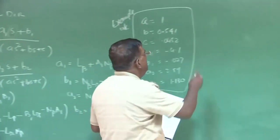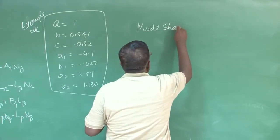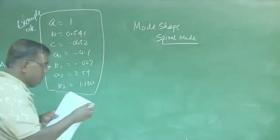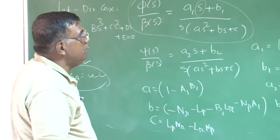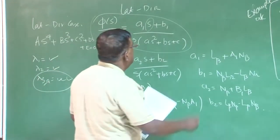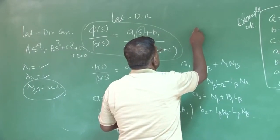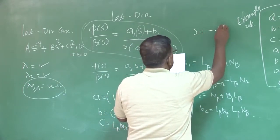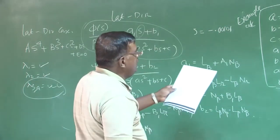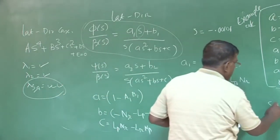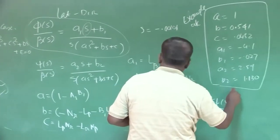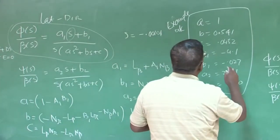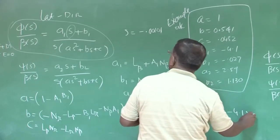Let us try to find the mode shape for the spiral mode — that is our next mechanical challenge. We are trying to find the mode shape for the spiral mode for the example airplane. If you recall, for spiral mode it was a real root, so s was a real number with complex part zero, and the value was minus 0.00101. So if I want to find phi(s)/beta(s), I put the value of a1, which is minus 4.1, into s, that is minus 0.00101.